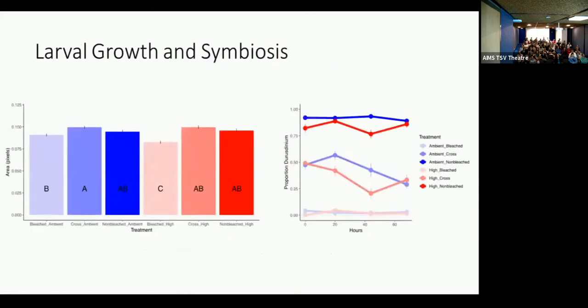We also measured growth. We found that in addition to survivorship, we have significantly lower growth in larvae of the bleached phenotype at high temperatures. It doesn't exist at ambient temperature. So physiologically, there's something compromised about that combination. Not only how well they survive, but how well they grow and thrive in their environment.